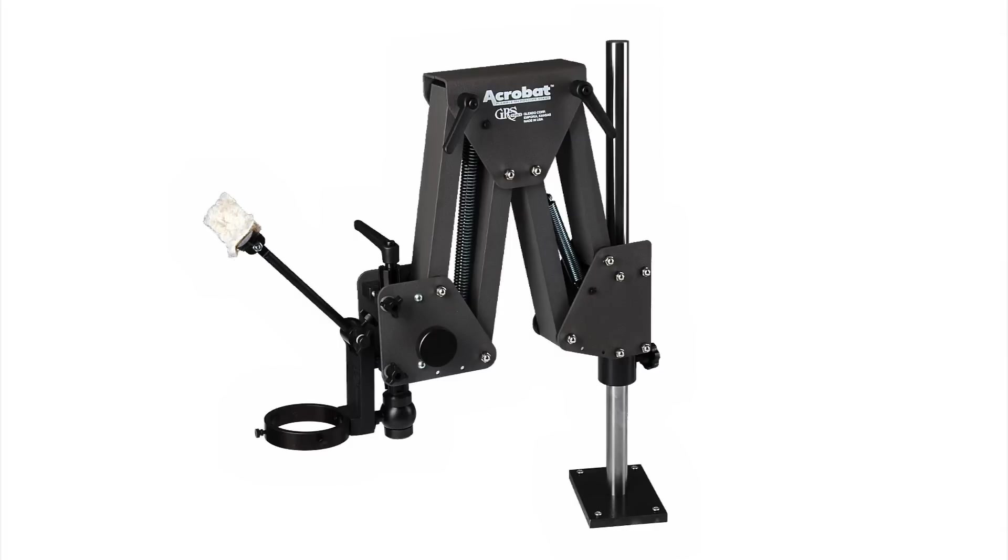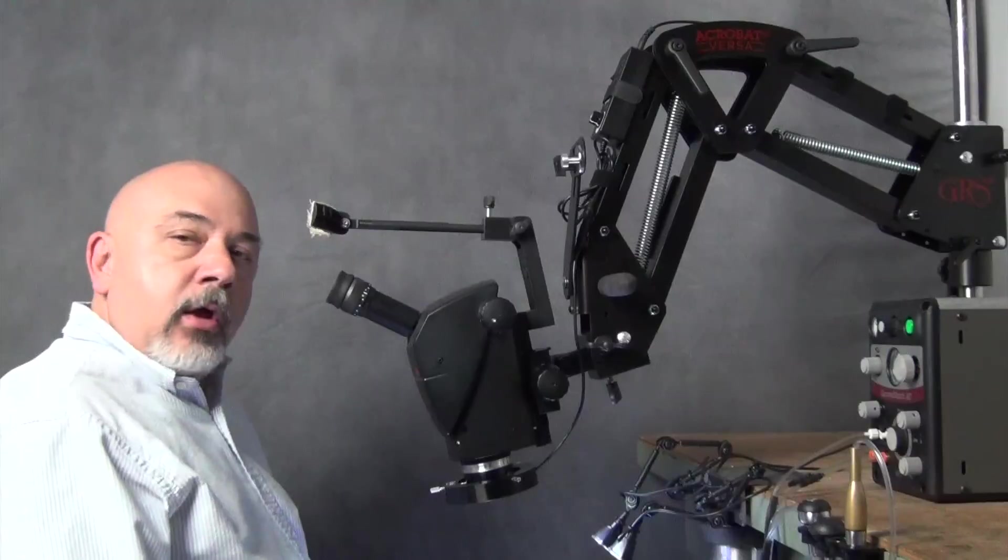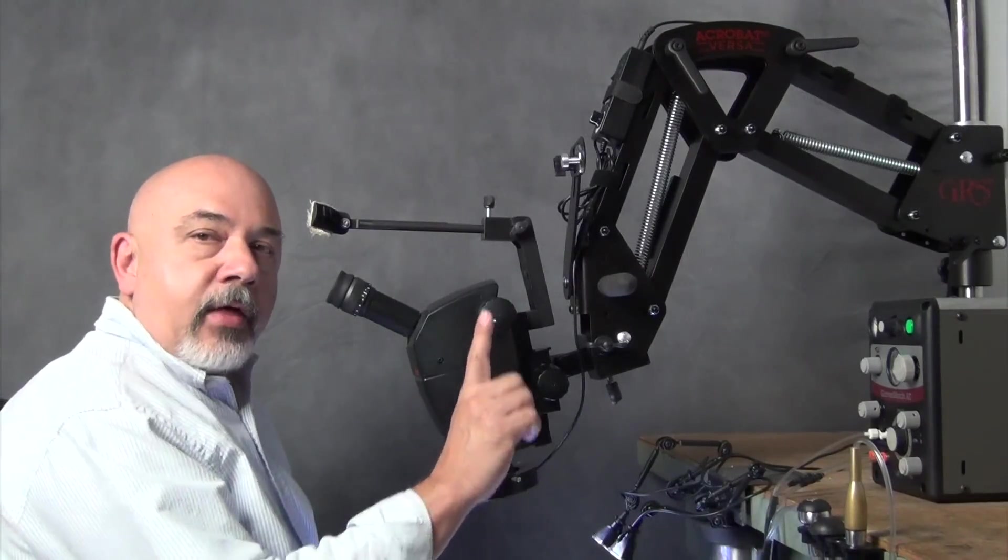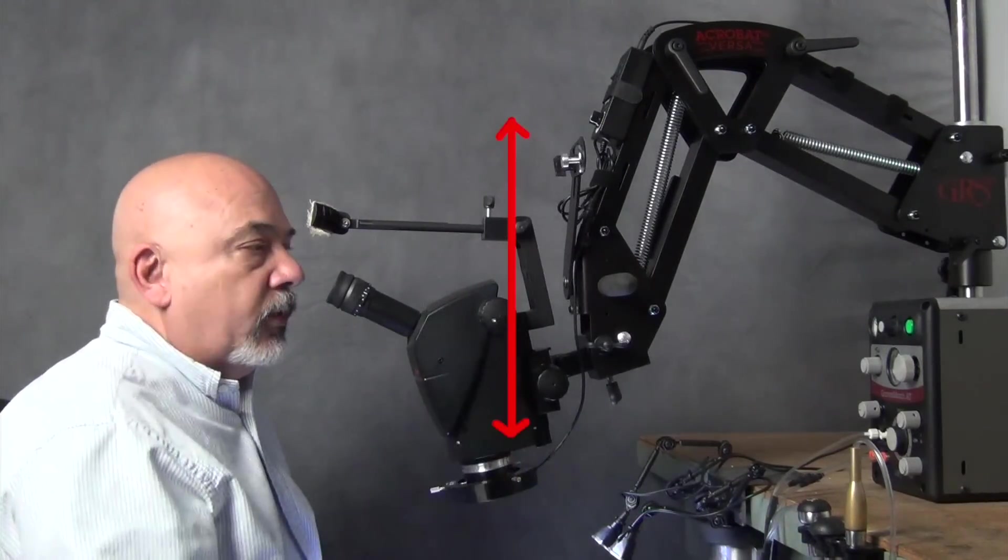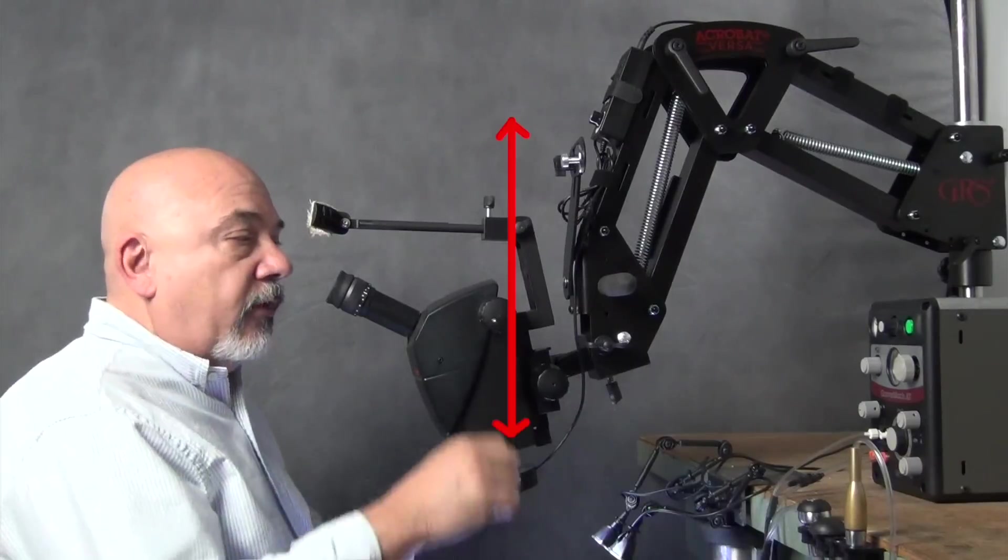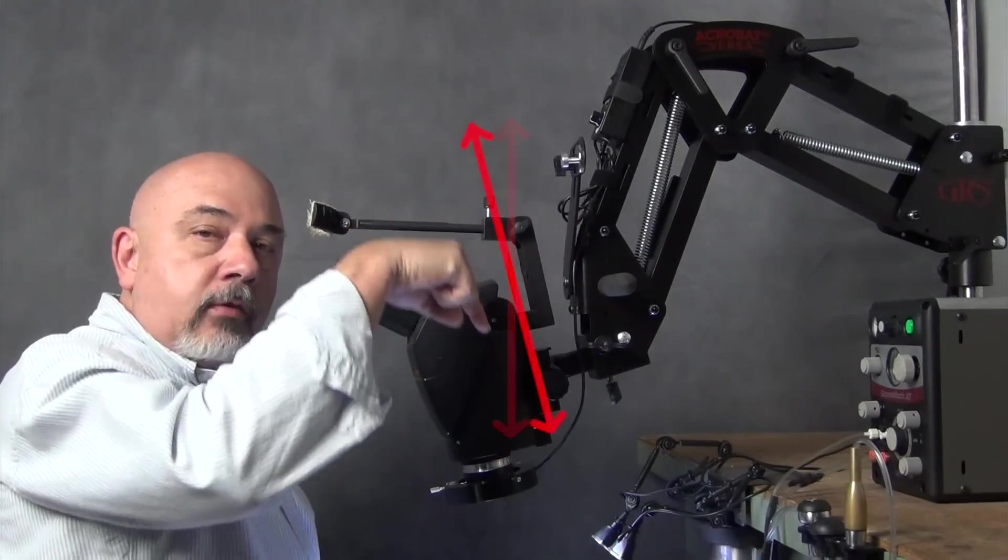The classic GRS Acrobat stand allowed you to tilt the microscope like this, but when you did and you focused it, the focus path was still vertical. With the Acrobat Versa, the focus path follows the angle of the microscope.